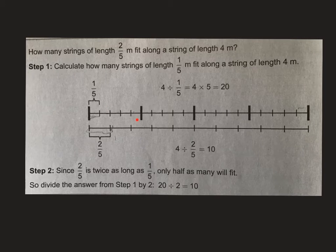So we have 5, 1, 2, 3, 4, 5 for each meter, and so 5, 10, 15, 20, that means it would break it into 20 pieces. So 4 divided by 1 fifth equals 4 times 5, which is 20.